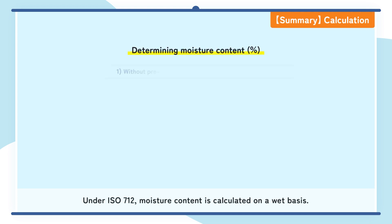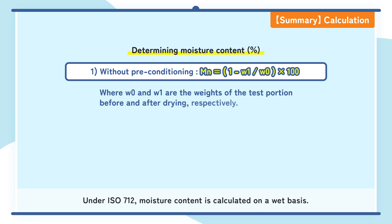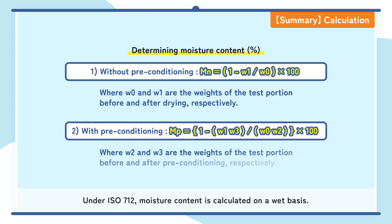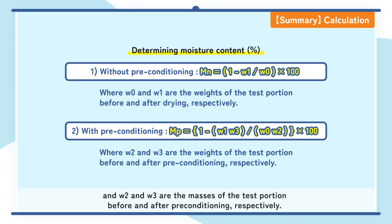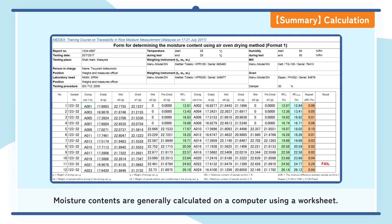Under ISO 712, moisture content is calculated on a wet basis. Formulas are shown for with and without preconditioning. In these formulas, W0 and W1 are the masses of the test portion before and after drying, and W2 and W3 are the masses of the test portion before and after preconditioning, respectively. Moisture contents are generally calculated on a computer using a worksheet.